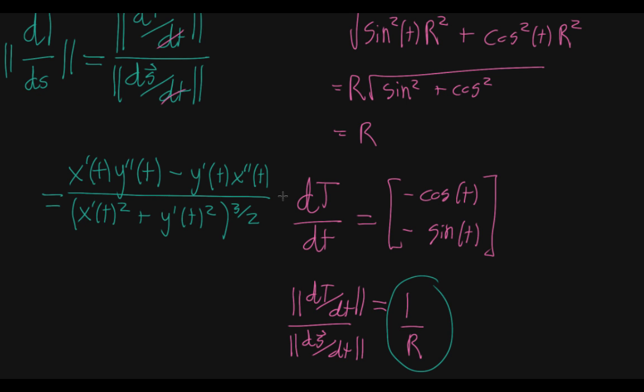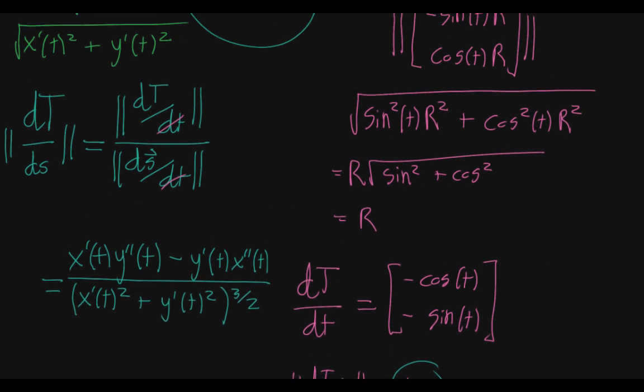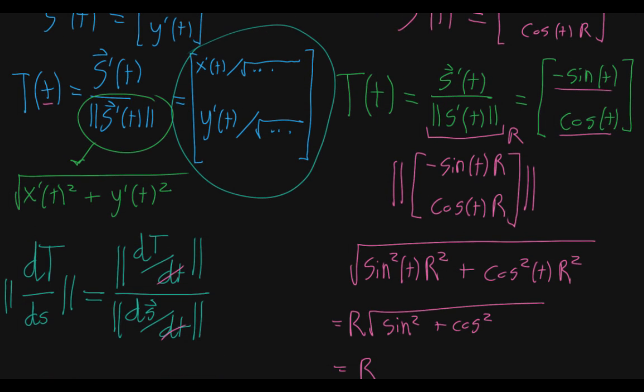You can maybe see why you're going to get terms like this, because when you're taking the derivative of the unit tangent vector function, you have the square root term in it, the square root that has x primes and y primes. So that's where you're going to get your x'', y'', as the chain rule takes you down there.